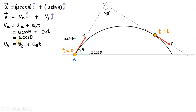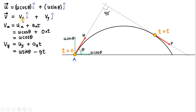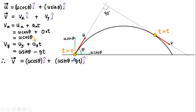For vy, we apply v = u + at along the y direction. The y component of initial velocity uy is u sin theta. The acceleration along the y direction ay is minus g, because gravity always acts vertically downward and downward is taken as negative. Therefore vy = u sin theta - gt. Substituting these components, the final velocity vector is: v = u cos theta i-cap + (u sin theta - gt) j-cap.